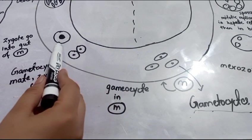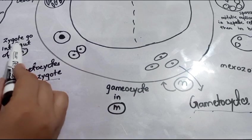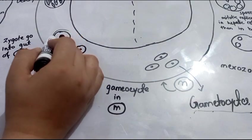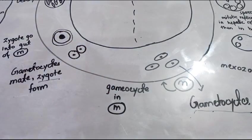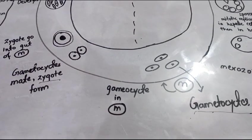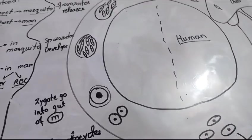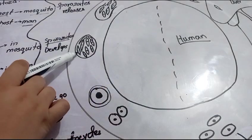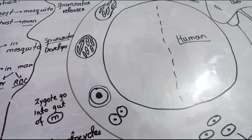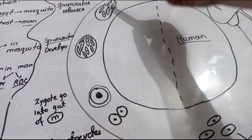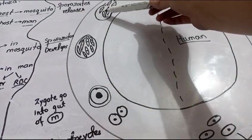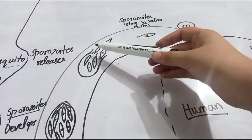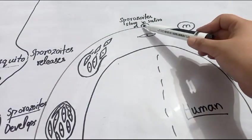The zygote, shown here in the diagram, will enter into the gut of the mosquito. As the gut has various types of enzymes, the zygote will form a membrane around itself to protect it from the harsh environment. Then mitotic division will occur inside this zygote and various kinds of sporozoites will develop. The cell then bursts and various sporozoites are released.